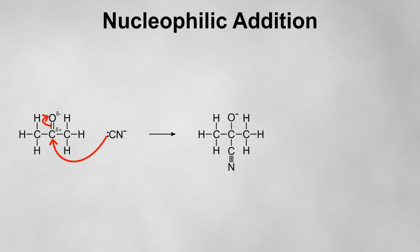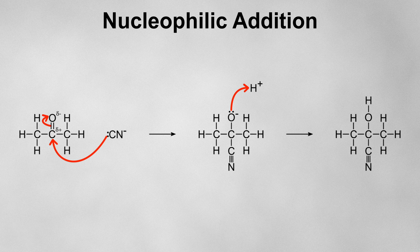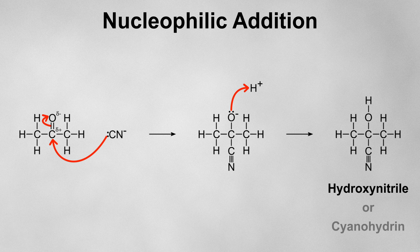Next, a lone pair on the oxygen will form a bond with an H+ ion to protonate it and form an OH. This results in a molecule that has both a hydroxy group and a nitrile group coming from the same carbon. We call this a hydroxynitrile, or a cyanohydrin.